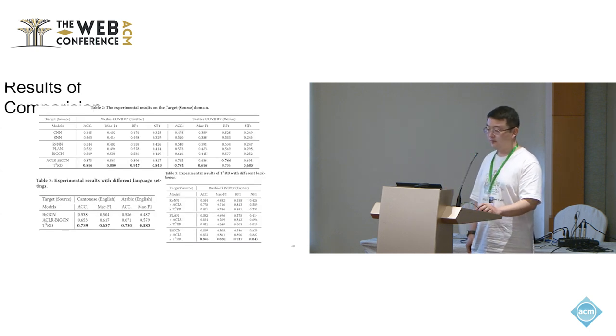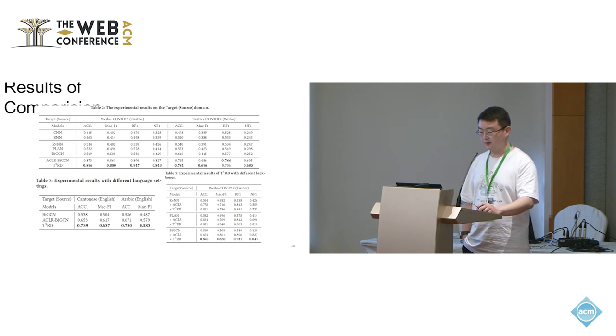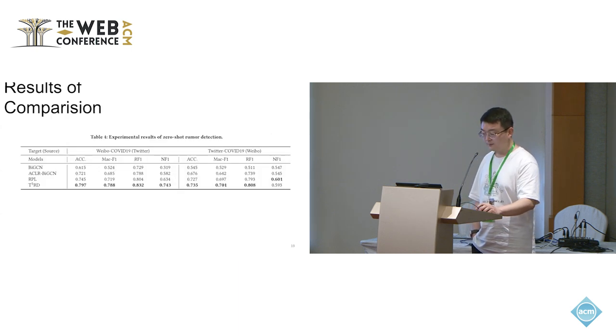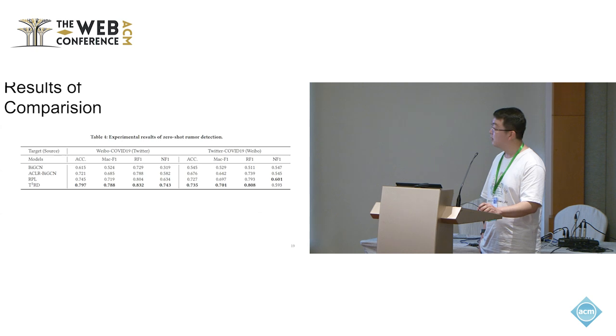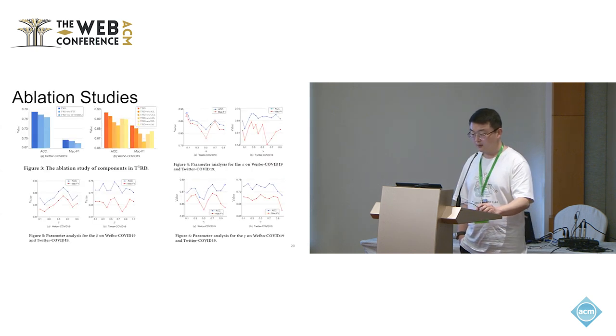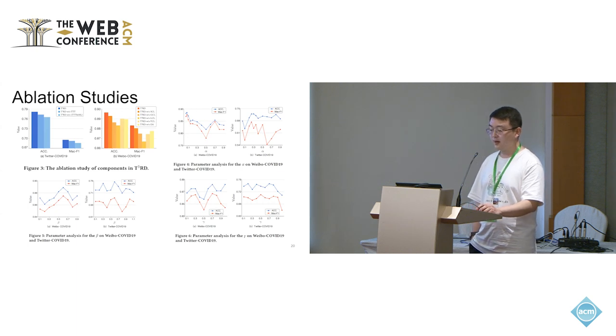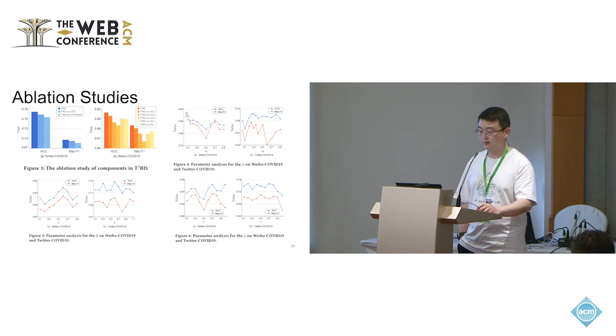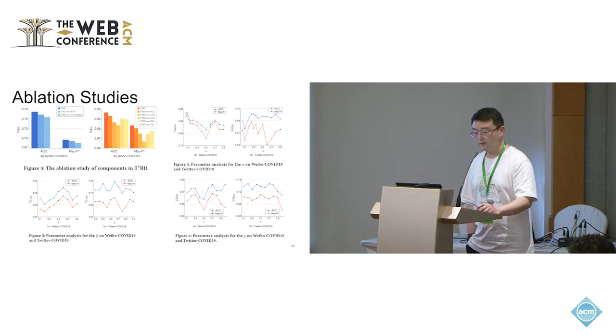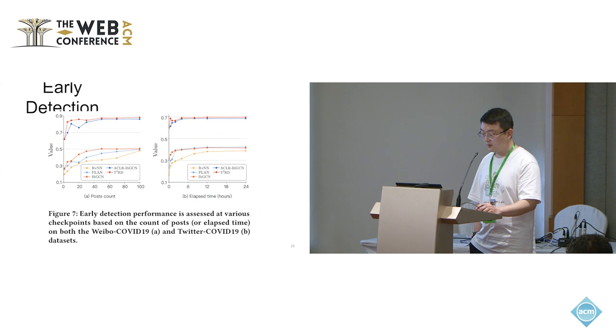We verify the effectiveness of our proposed method in rumor detection tasks under low-resource conditions. In this scenario, we adopt high-resource domain dataset as a considerable smaller labeled target domain dataset for training, reserving the remaining target domain for testing. Furthermore, we conduct zero-shot rumor detection and achieved relatively good results on two datasets. In figure 3, we provide sufficient ablation study by systematically removing components of our method to investigate the effectiveness. And in figures 4 and 6, we show the results of key parameter analysis.